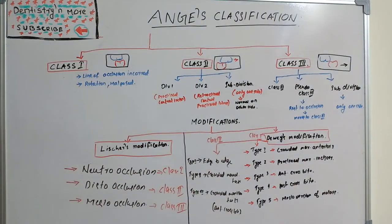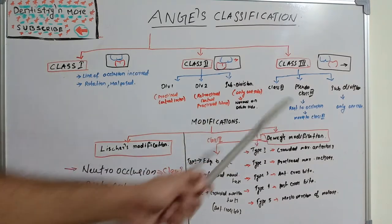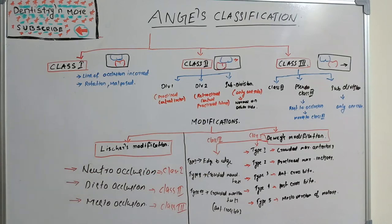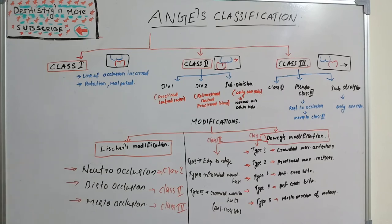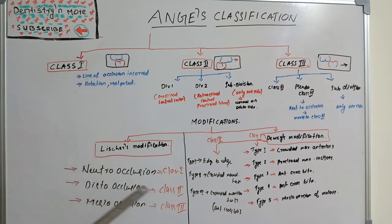Subdivision in Class 3 is just like in Class 2 — one side has Class 3 and the other side has normal occlusion. That is the basic Angle's classification. Now for the modifications: Lischer's modification and Dewey's modification are commonly asked in exams. Lischer's modification uses the terms neutral occlusion for Class 1, disto-occlusion for Class 2, and mesio-occlusion for Class 3.